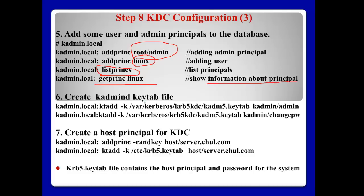Number 6: Create the kadmin keytab file. After adding principals to the database file, we need to make a keytab file — the keytab file is a database file. In my case, I will add these entries. Number 7: we add users root and linux to the keytab file. Also we need to add the host: host/server.charl.com. This will be added to the keytab file. Later, client.charl.com will also be joined and included in this file.